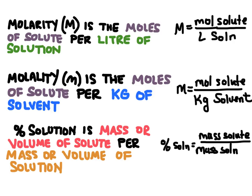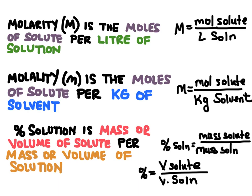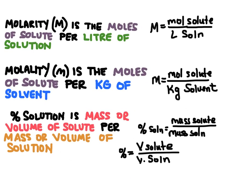Finally we have percent solution. This is the mass or volume of the solute per mass or volume of the solution. Percent solution equals the mass of the solute over the mass of the solution — or volume if we're dealing with liquids. We then multiply by 100 to turn it into a percentage.